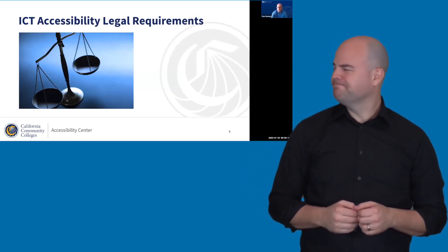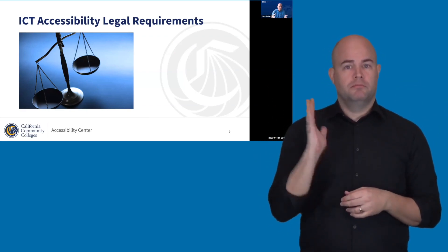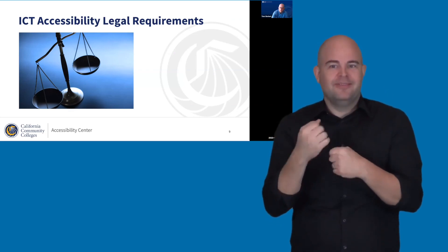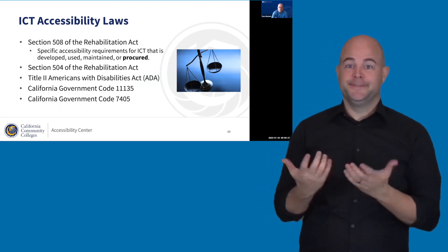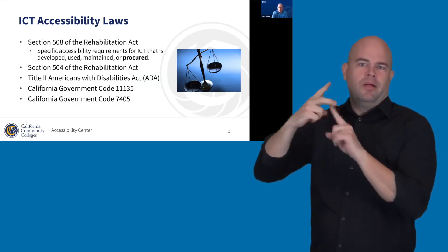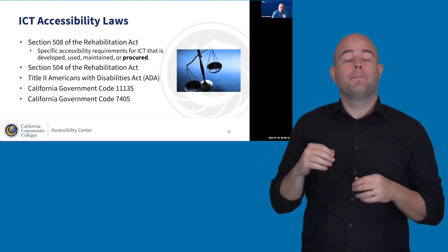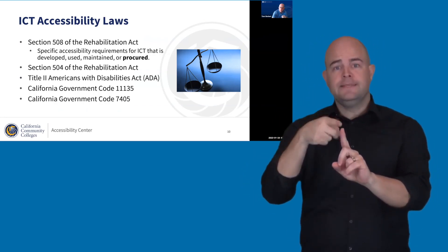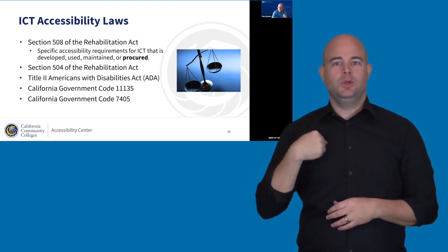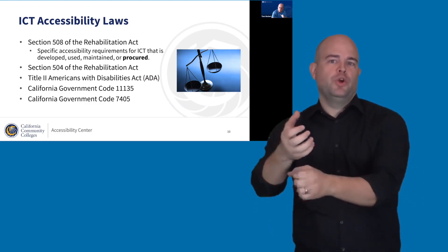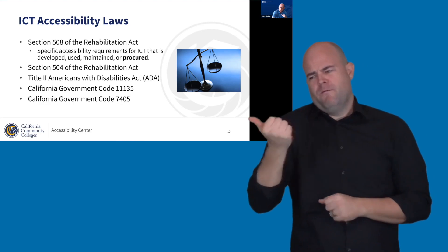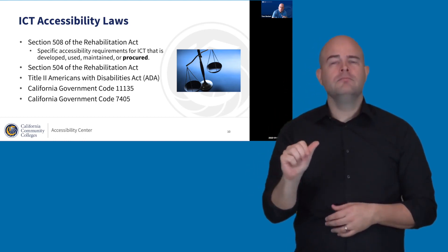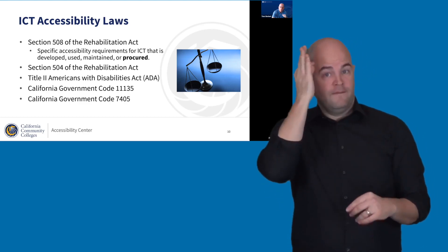Now I want to briefly cover some of the legal requirements. We are also legally required to ensure accessibility of our information and communication technologies. The main law we'll discuss is Section 508 of the Rehabilitation Act, which has specific accessibility requirements for ICT that we develop, use, maintain, or procure. Other applicable laws include Section 504 of the Rehabilitation Act, Title II of the Americans with Disabilities Act, and a couple of government codes which apply these federal laws to us.